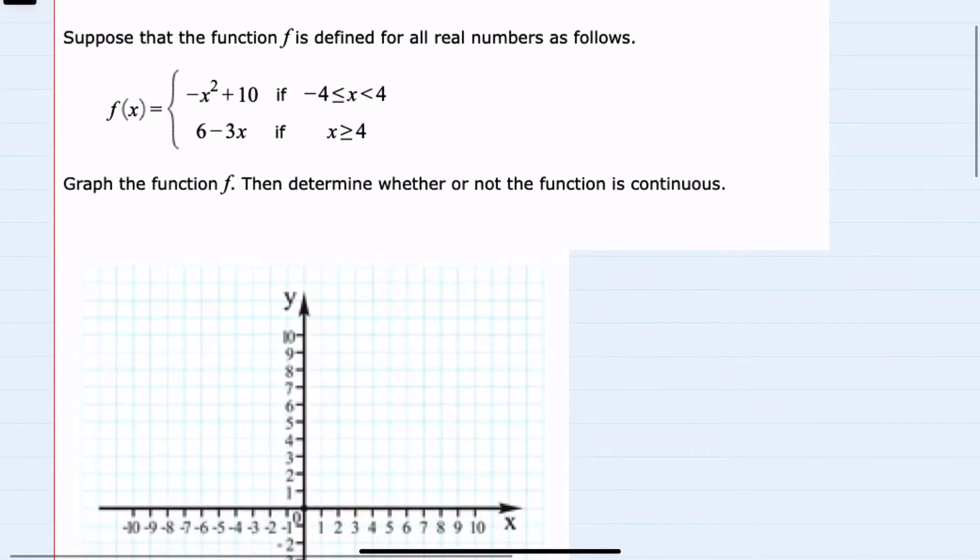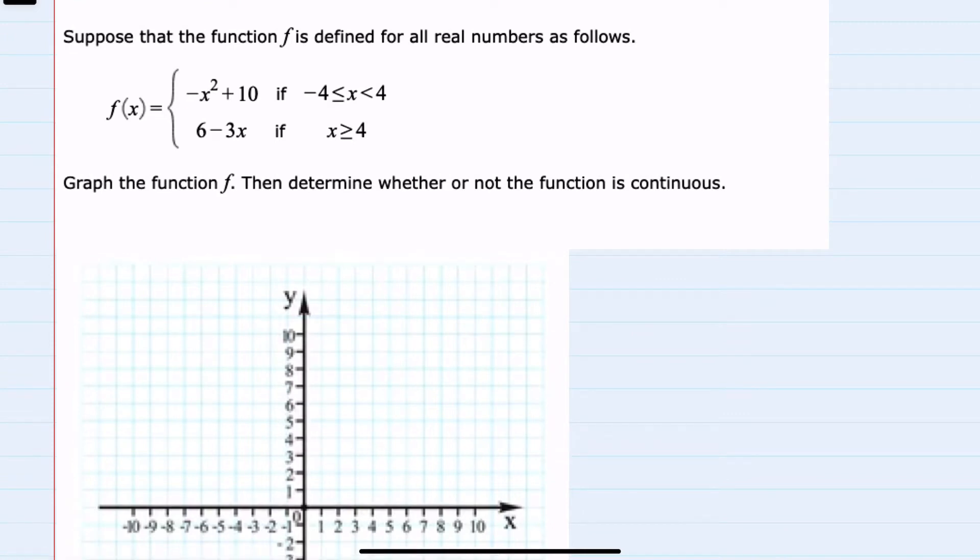So to graph, I'll start with the top portion, which I recognize as having a parabola shape. Since it has this plus 10, I know the vertex is going to be at 0, 10. And since it has that negative coefficient, that would make it upside down, so our parabola will be opening downwards.